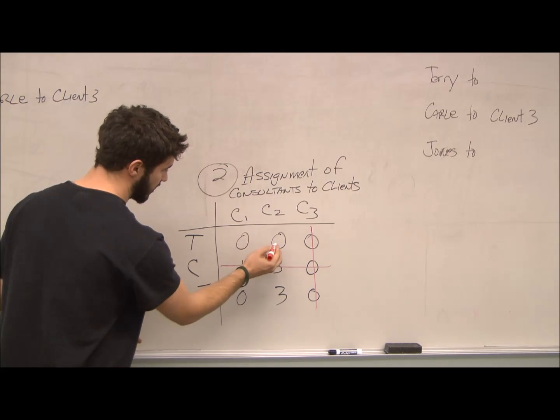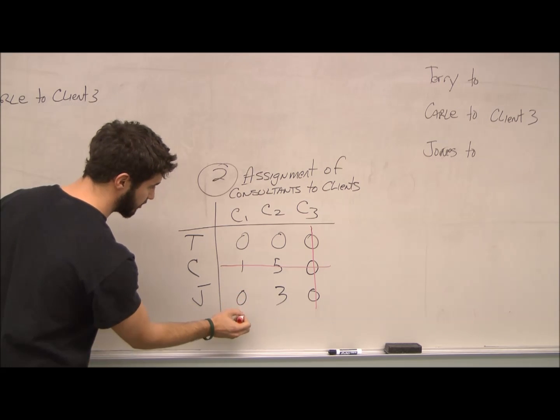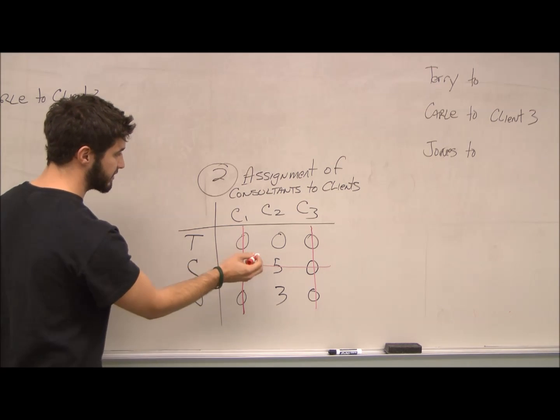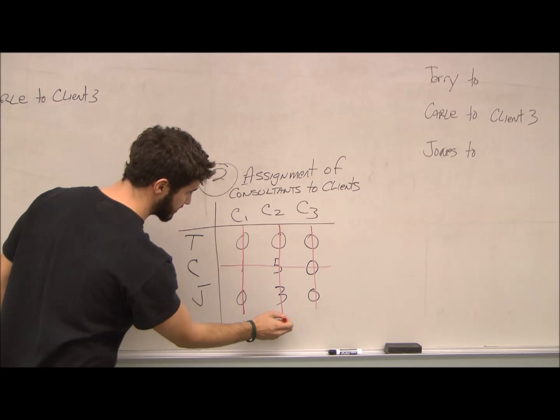As you can see, there are two options here, and there's one option left on the bottom for Jones. So we're going to cross off this line, and that means there's only one client left for Terry. So Terry gets that client, and we'll cross that off as well.